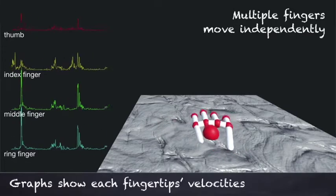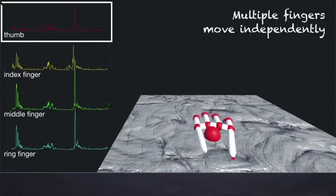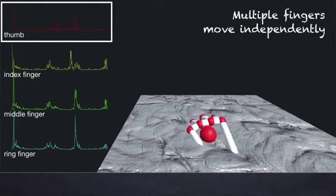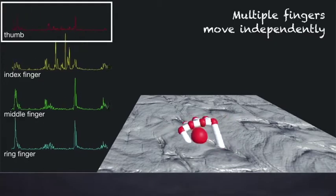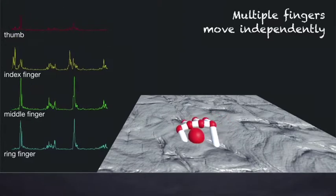As you can see, the thumb doesn't have any large movement in comparison with the other fingers. Further, in the white frame, you can also see the phase differences in the index finger and the other fingers.